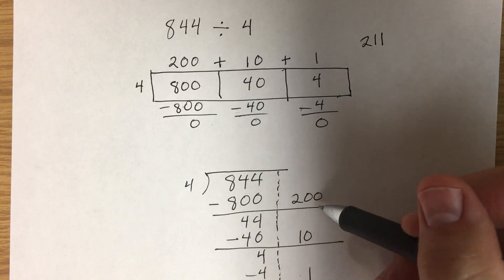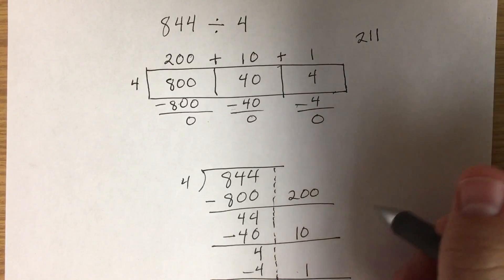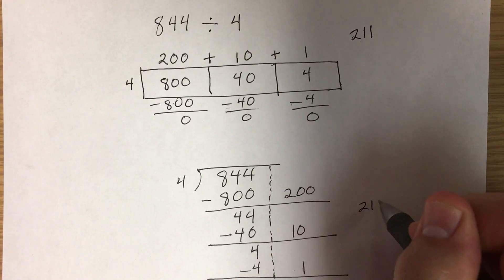Here are our values split up. We're going to add them all together. We have 200 plus 10 plus 1, which equals 211.